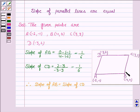Now, we need to prove that slope of BC is equal to slope of AD.